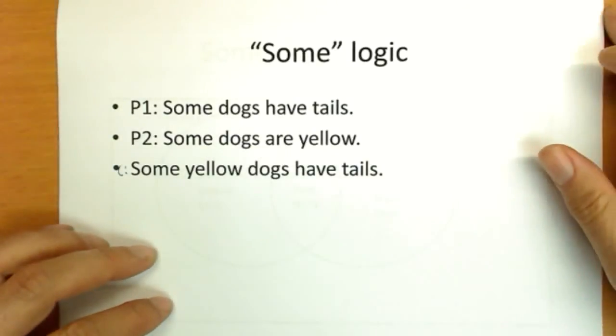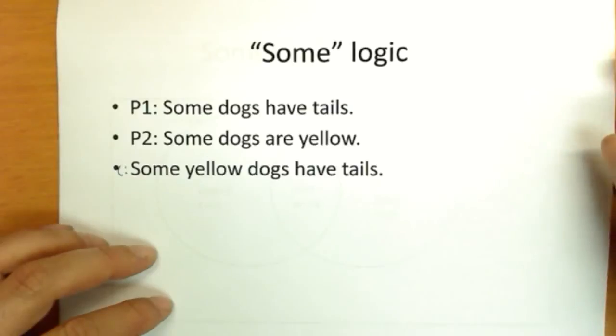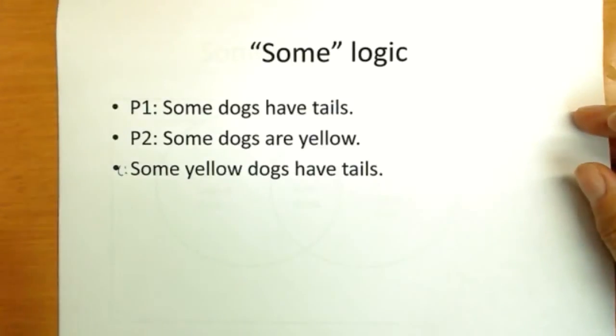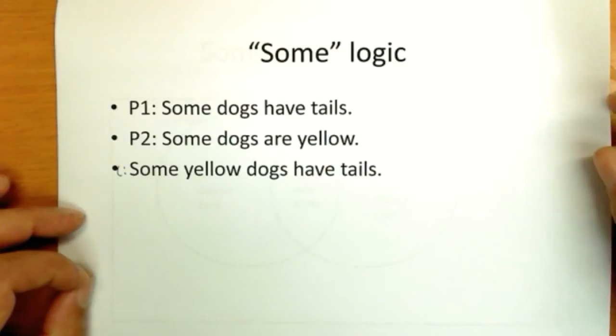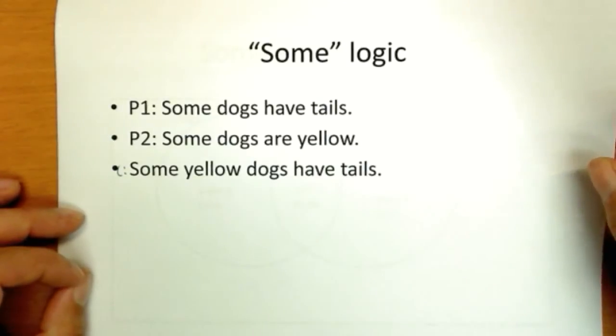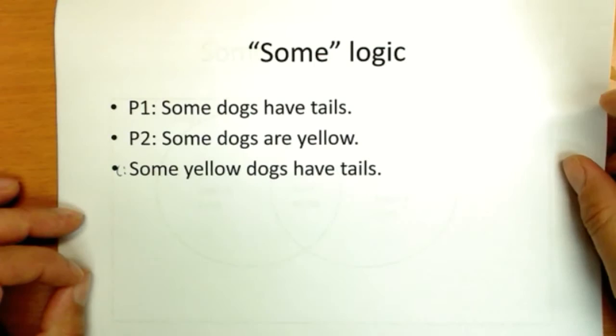Now draw a Venn diagram to represent these premises and discuss the logic. Think about the logic of this first. Is this valid and is this sound? After completing that, resume the video. So hit pause right now and go ahead and solve this logic question. Draw a Venn diagram, determine if it's valid and it's sound in your mind, and then we'll discuss it.